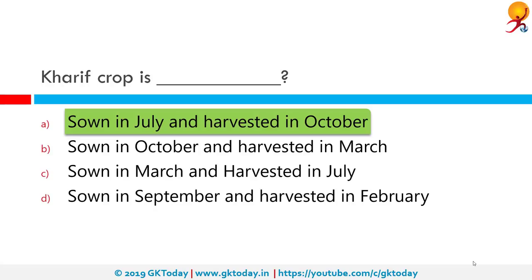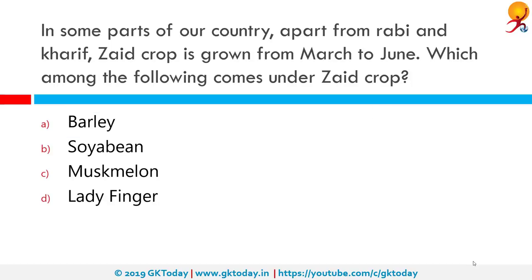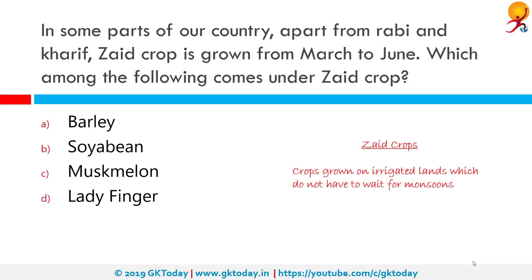Kharif crops are sown in July and harvested in October. Kharif crops — also called autumn crops — are cultivated and harvested in India, Pakistan and Bangladesh during the summer season from June to October depending on the area. In some parts of the country, apart from Rabi and Kharif, Zaid crops are grown from March to June. Zaid crops are grown on irrigated lands in the short duration between Rabi and Kharif seasons. Among the options, musk melon is a Zaid crop.